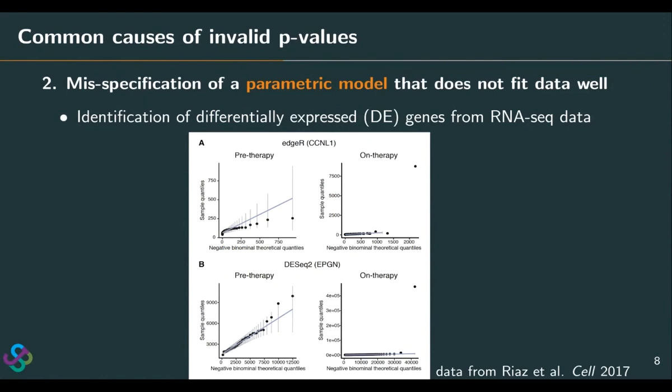The second common cause of invalid p-values is the misspecification of a parametric model that does not fit data well. Here I'm going to use the example of differential expression analysis from bulk RNA-seq data. This is a dataset from immunotherapy patients from the SAIL paper. Two popular methods, DESeq2 and edgeR, were applied to the data. From the QQ plot, for the two conditions — pre-therapy patients and on-therapy patients — the negative binomial models assumed by each method do not fit the data very well.